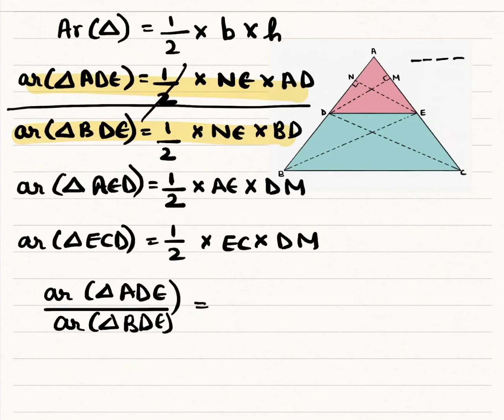this gets cancelled, this gets cancelled, NE and NE get cancelled. So we'll be left with AD by BD, which I'm writing here.